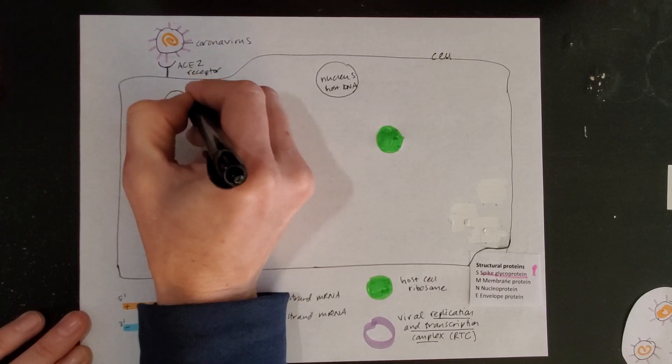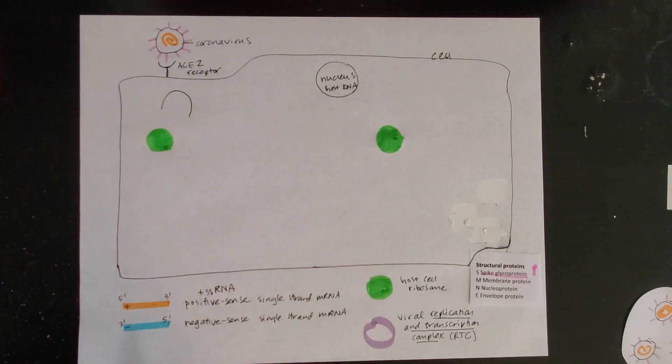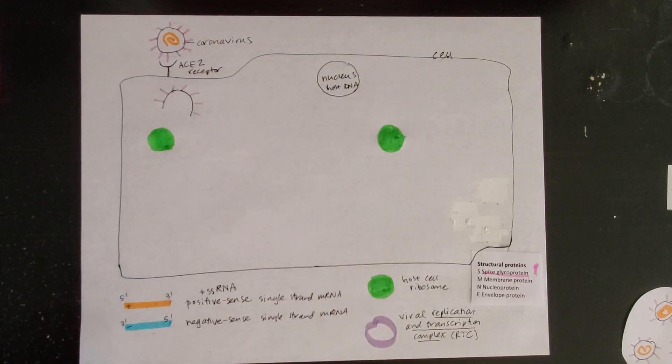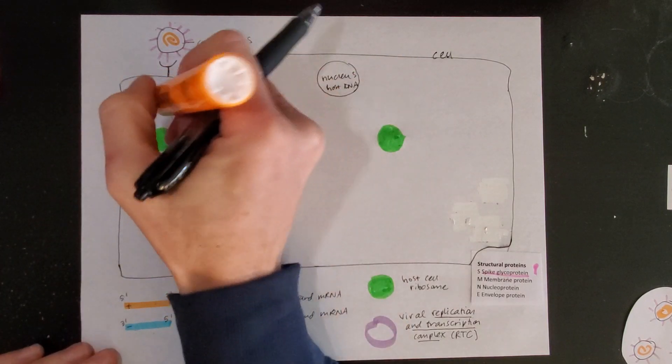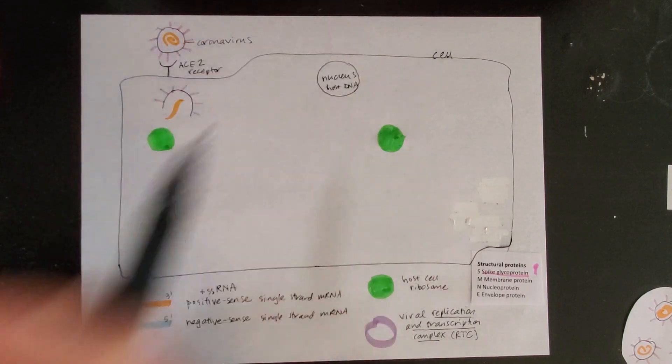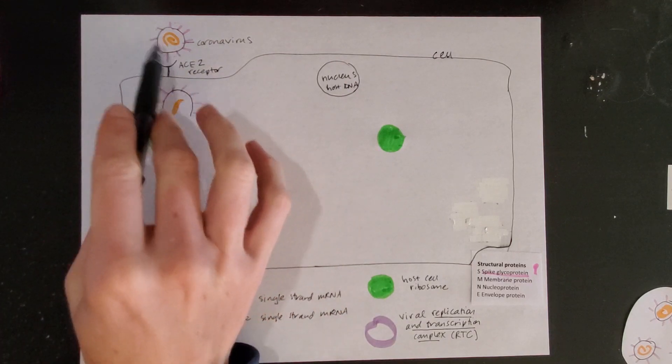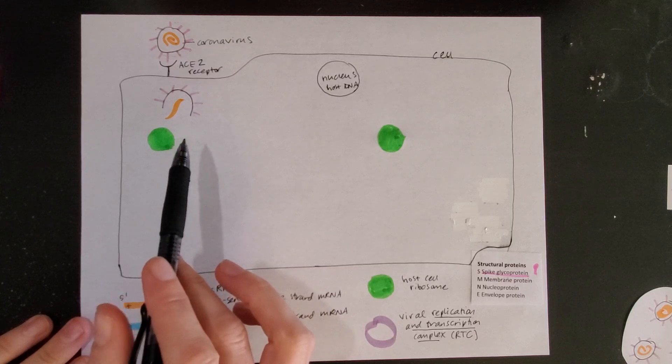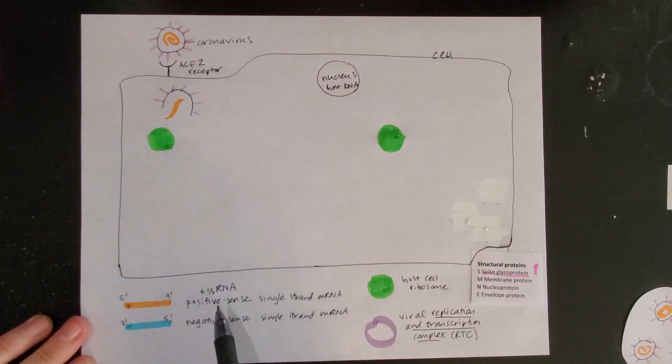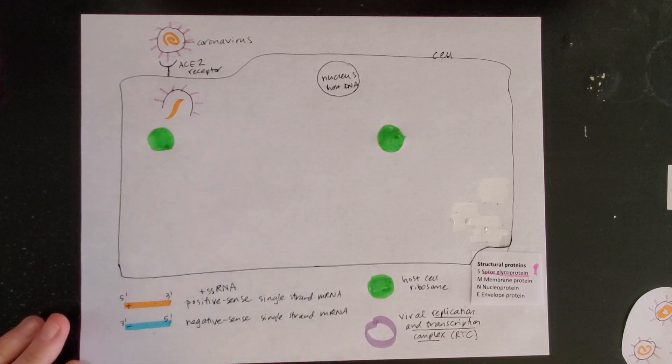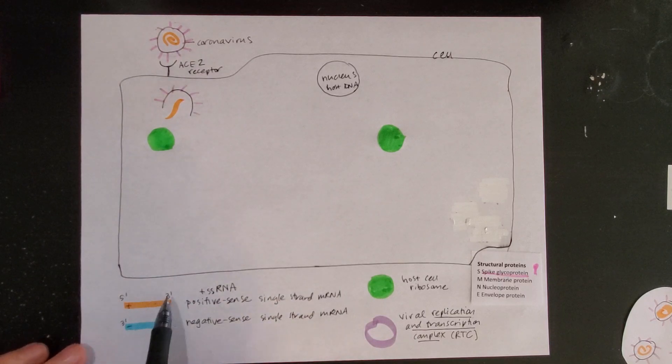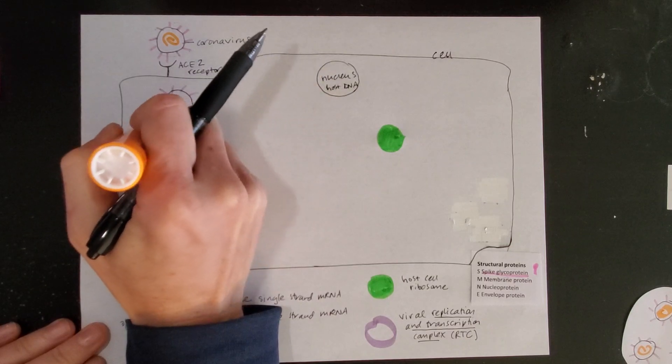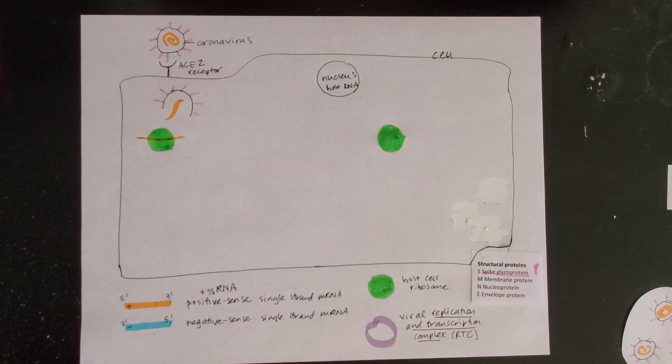Once that coronavirus moves into the cell it opens up, so the mRNA is able to get out into the cell. It's not locked up inside that protective virus envelope. The first thing that mRNA does - because it's positive sense - means it's ready to read right away. The five prime to three prime means it's ready to read through the host ribosome.